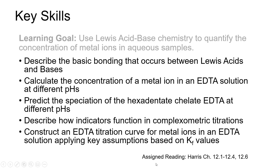Your aside reading for this module is Harris chapter 12, specifically sections 12.1 through 12.4 and section 12.6 in the ninth edition. In older editions of Harris, this chapter moves around a little bit — you may find the compleximetric titration chapter as either chapter 11 or chapter 13.